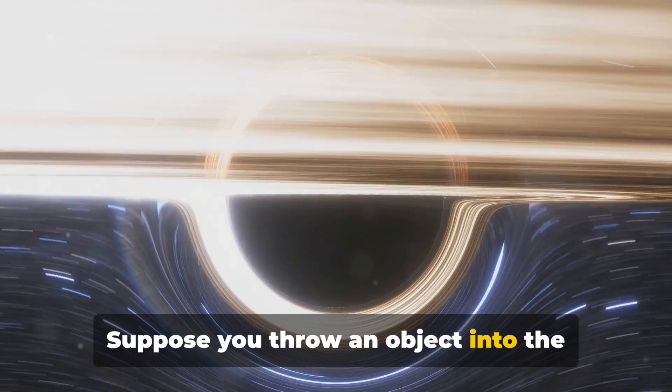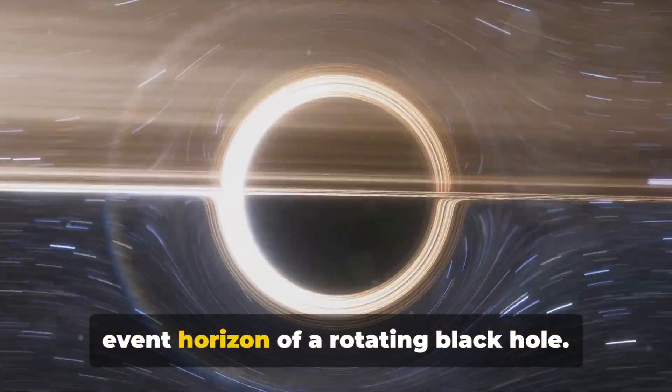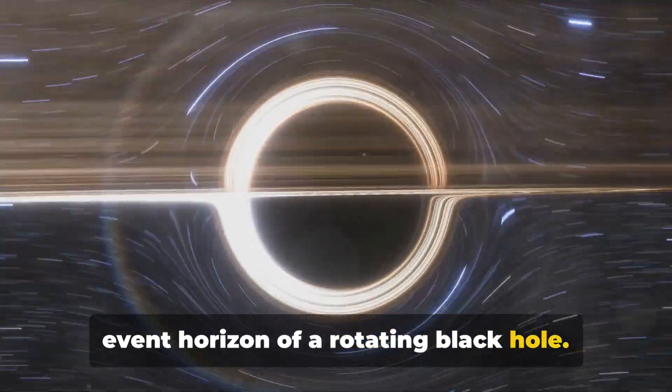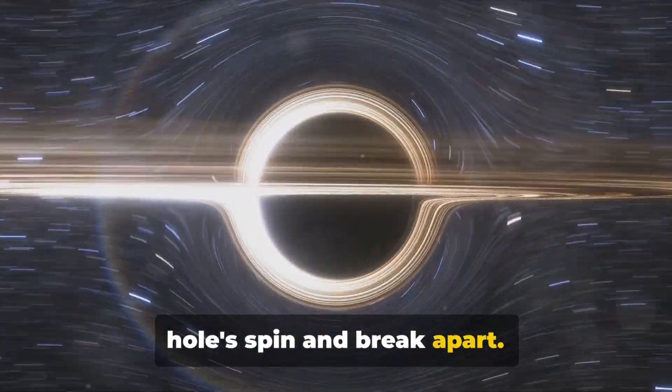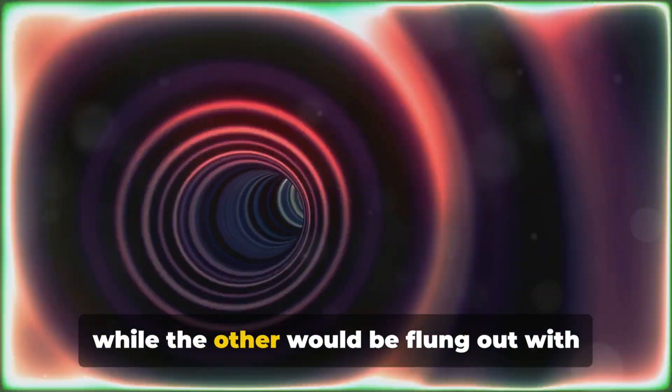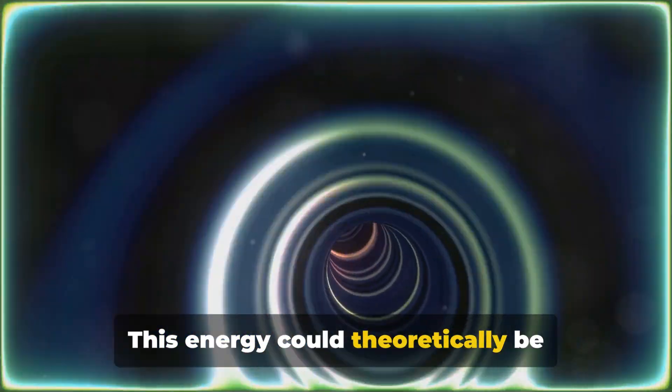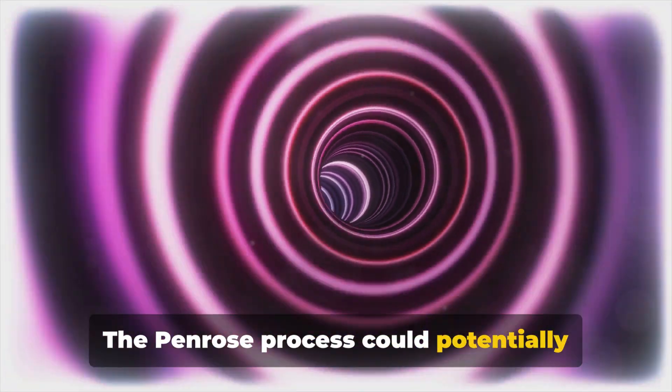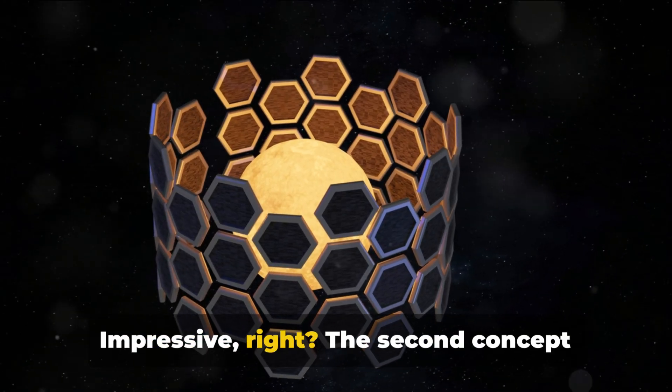Suppose you throw an object into the ergosphere, the region just outside the event horizon of a rotating black hole. The object would get caught in the black hole's spin and break apart. One part would fall into the black hole, while the other would be flung out with increased energy. This energy could theoretically be captured and used. The Penrose process could potentially extract up to 29% of a black hole's mass energy. Impressive, right?